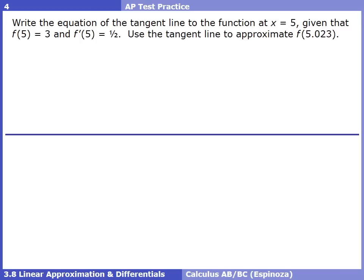In the first two examples we knew the function, so with a calculator we could have found the values directly. But there are other types of problems that illustrate the usefulness of tangent lines, like these AP practice problems. In this first AP example, there is no equation given. How would we ever find what f(5.023) is? A tangent line could help us out. We want to write the equation of a tangent line at x = 5, given that f(5) = 3 and f'(5) = 1/2, then use that to approximate f(5.023).